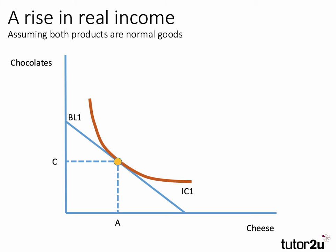Here's our initial equilibrium, where the tangency point between IC1 — indifference curve 1 — and budget line 1 shows consumers buying C quantity of chocolates and A quantity of cheese.